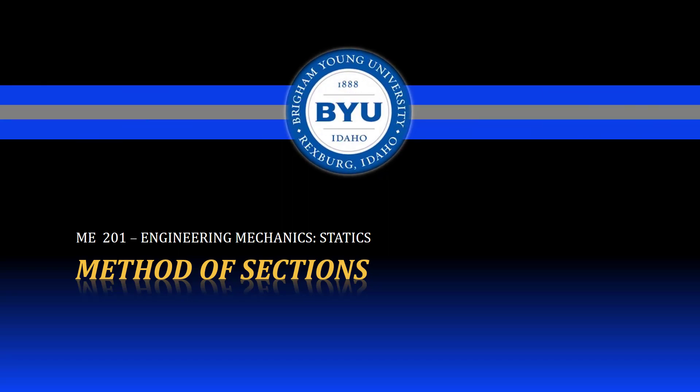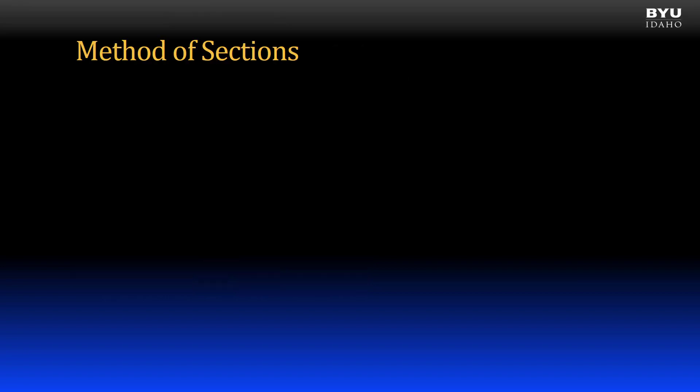Welcome to Statics. The method of sections is another method for analyzing truss member forces. The method of sections is useful when you want to find only certain member forces in a truss, whereas the method of joints is useful when you want to find every member force in a truss.